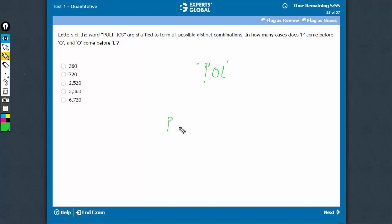The question means that P, O, L have to come in this order, while there may be other alphabets around.